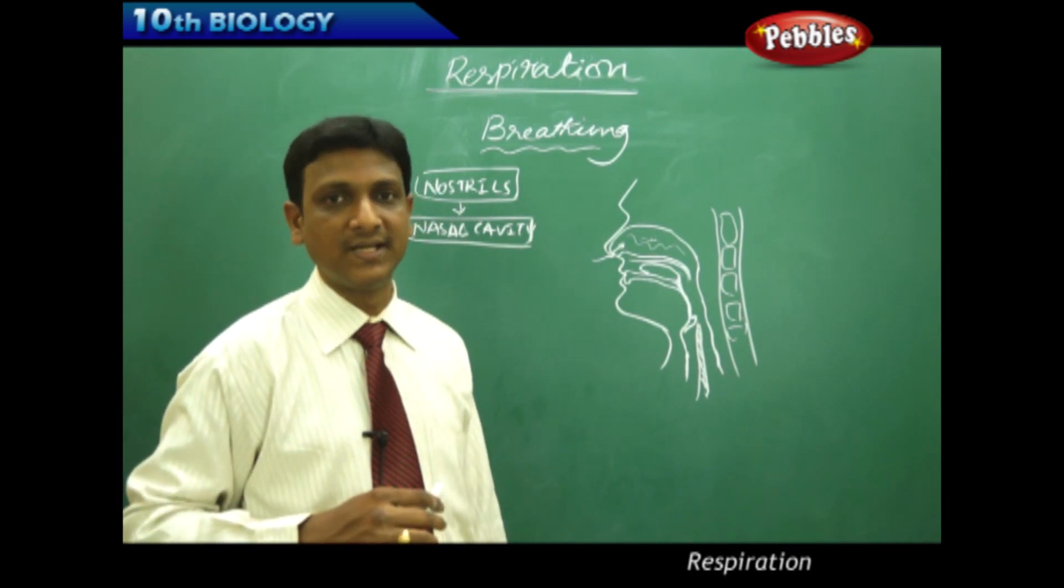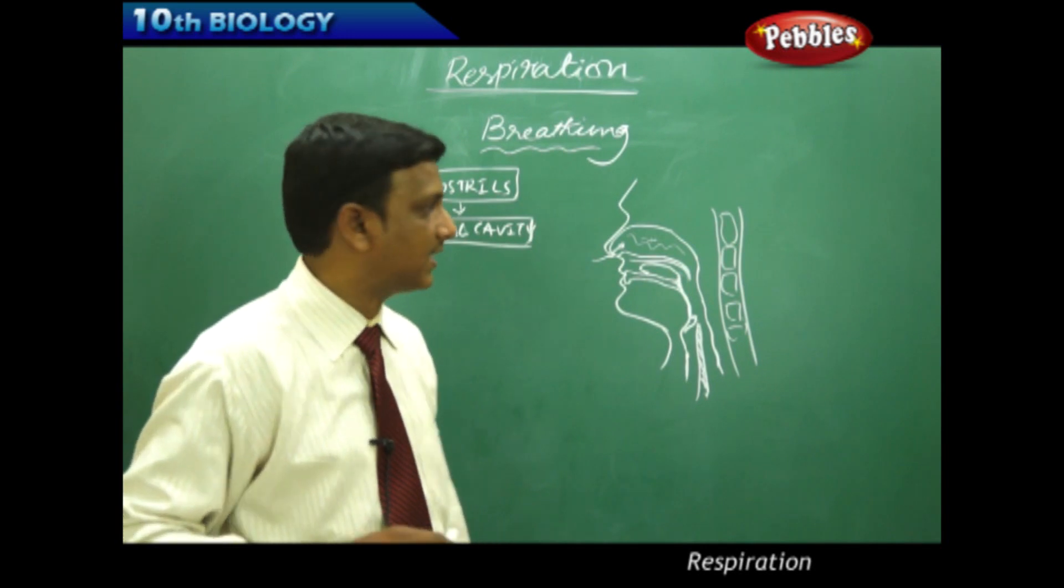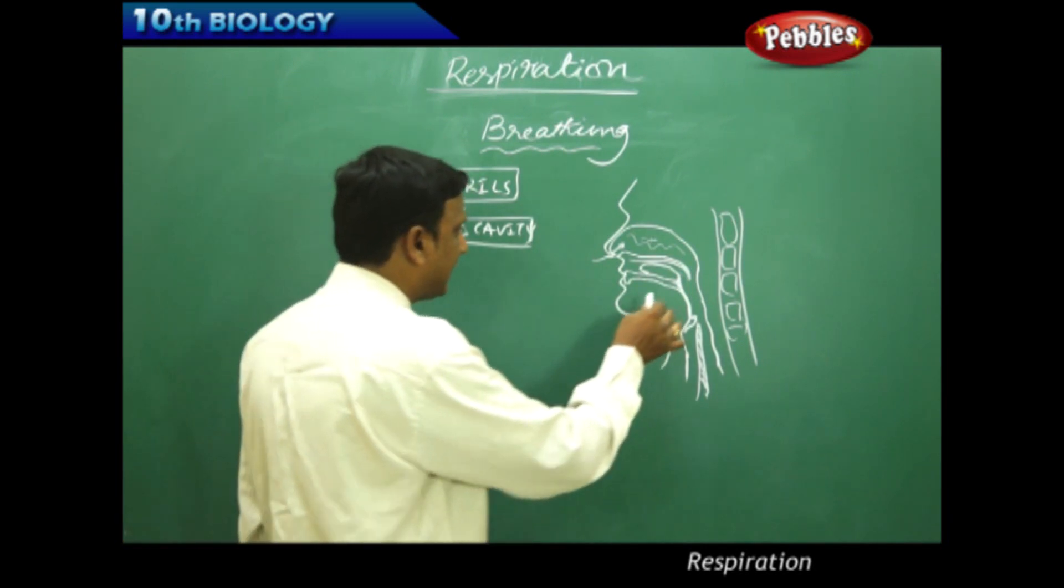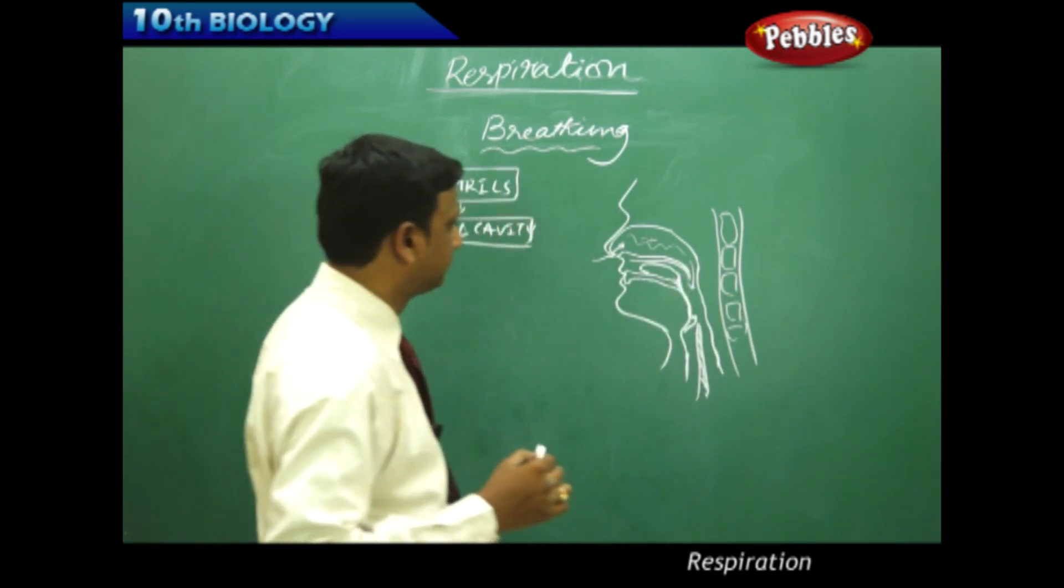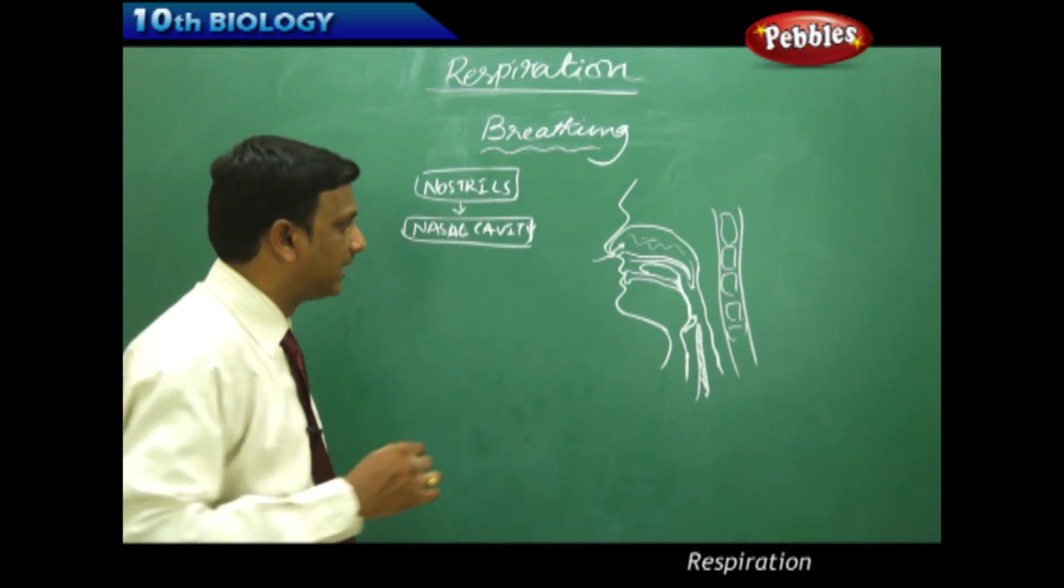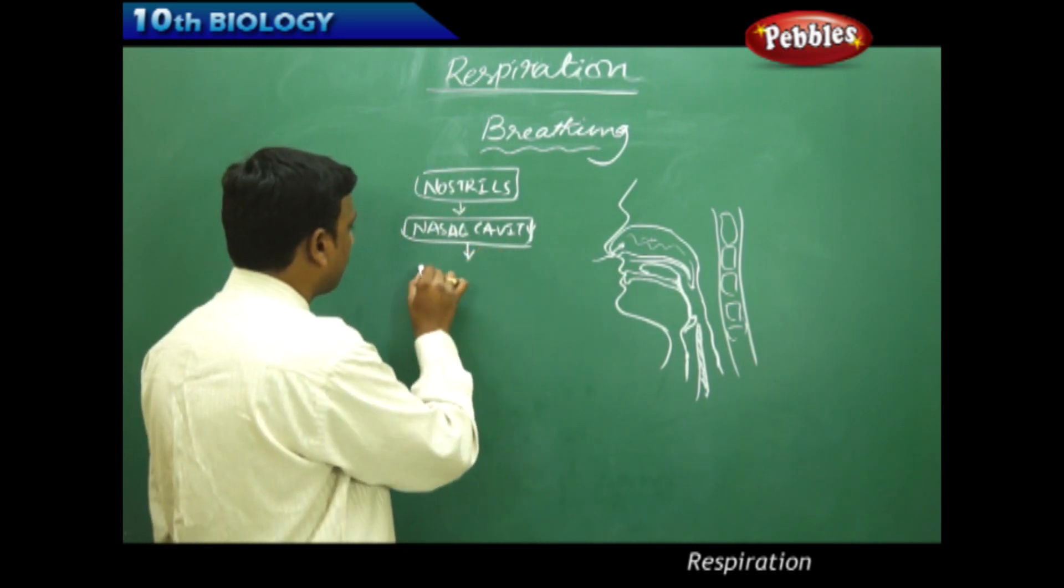So the air that we breathe in must have the temperature equal to our body temperature, and the moisture is to be maintained. The air is humidified and the humidified and warmed air is passed down into the pharynx.